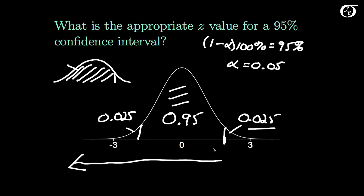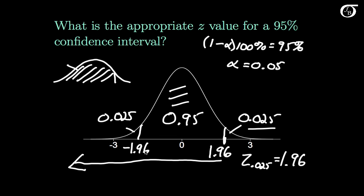The table tells us that this value is 1.96. In other words, z sub 0.025 — the z value with an area of 0.025 to the right — is 1.96. The value on the left side, due to symmetry about 0, is minus 1.96. So our confidence interval is found by taking the sample mean and adding and subtracting 1.96 times sigma over the square root of n.